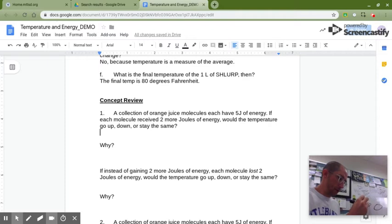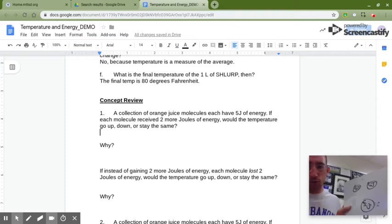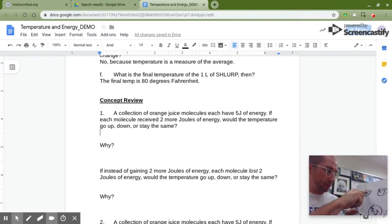Draw three. Each has five. Each molecule received two more joules, so each molecule goes from five, the average right now is five, right? Five, ten, fifteen, fifteen divided by three is five. Average is five, they all have five.